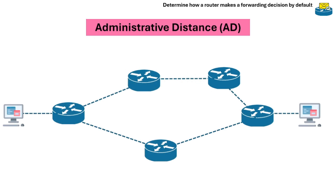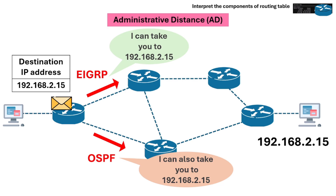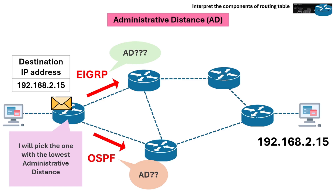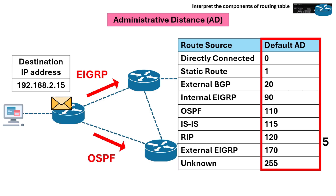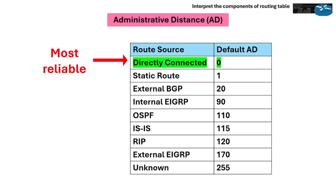The next priority is administrative distance, or AD. It is a metric used by routers to determine the trustworthiness of a routing protocol. When multiple protocols offer routes to the same destination, the router picks the one with the lowest administrative distance. The administrative distance is a local value that helps routers decide which route to install in their routing table.